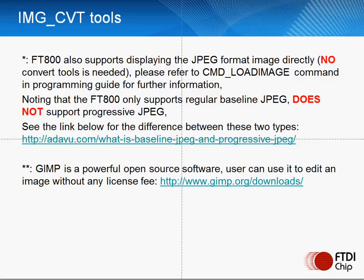JPEG is supported with the FT800, but this is true for baseline JPEG images only, not progressive JPEG images. The basic difference is that baseline draws the full image from top left to bottom right, whereas progressive puts out an initial image and gets progressively better with each scan. More details can be seen at the web link on this slide, and for more details of GIMP, a more powerful open-source utility, you can go to the web link at the bottom of this slide.